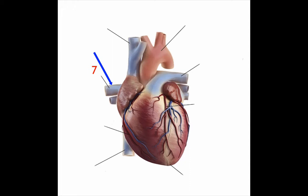Now, this structure is responsible for transporting oxygenated, depleted blood away from the heart and back towards the lungs. What is this structure? Structure number seven.